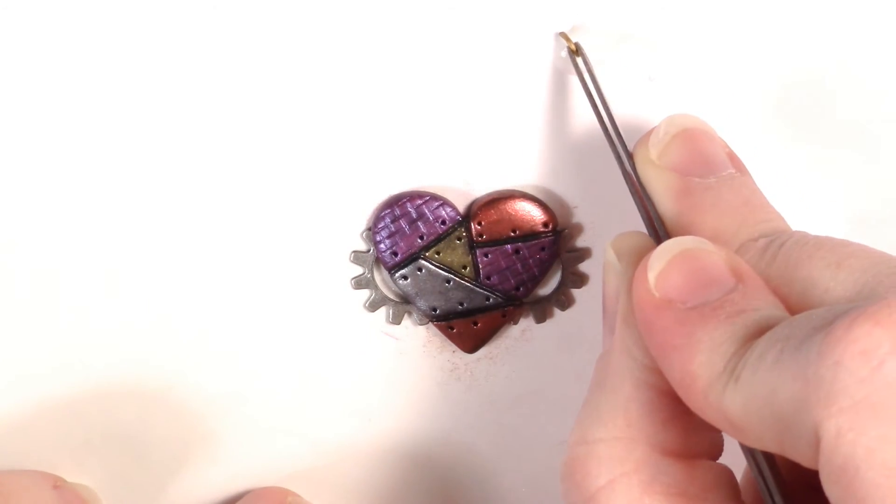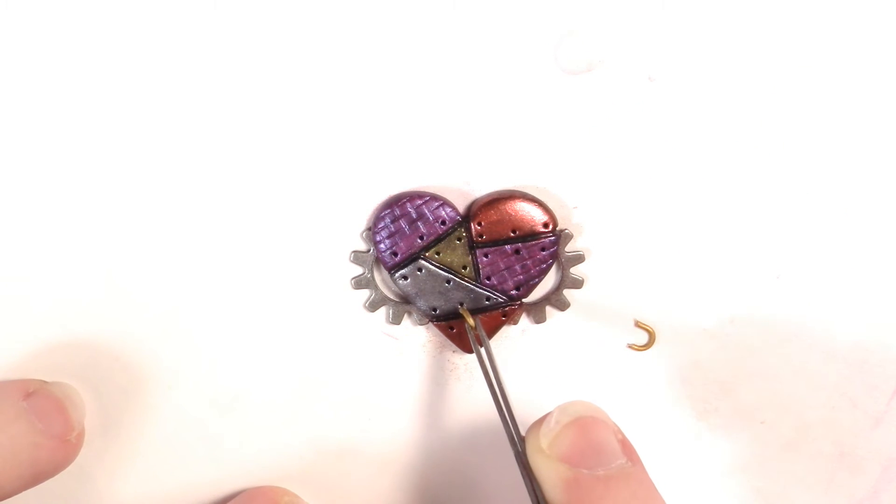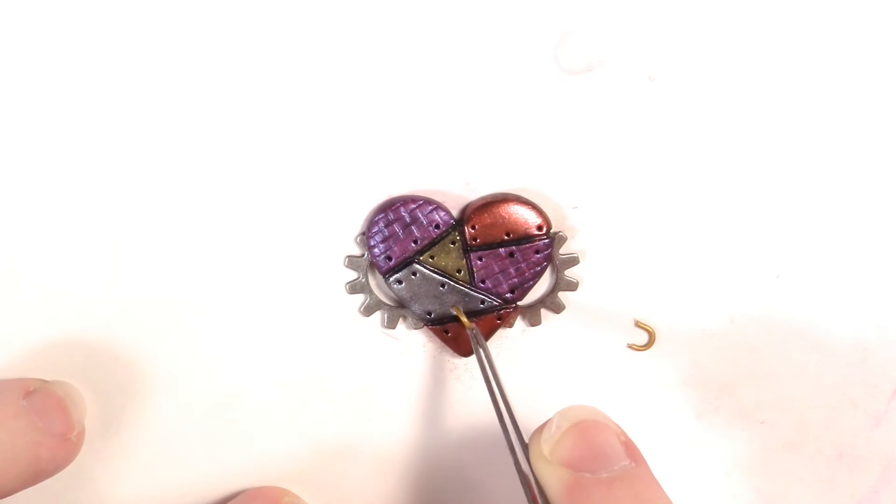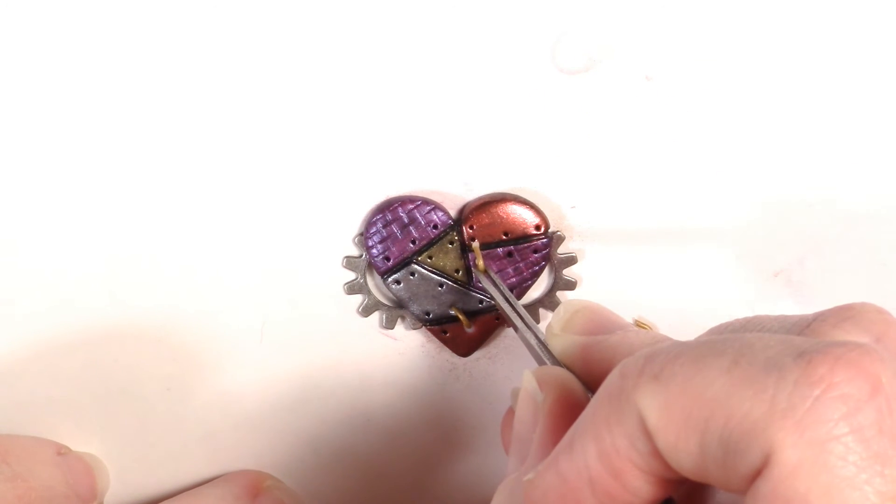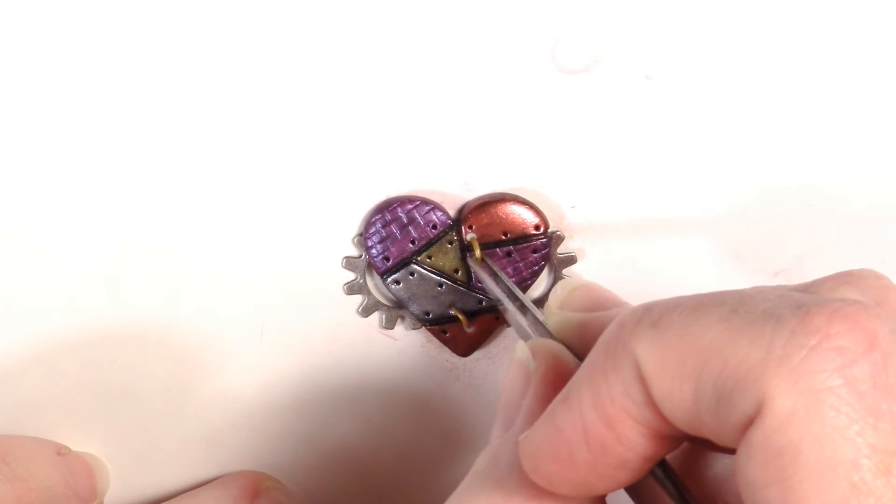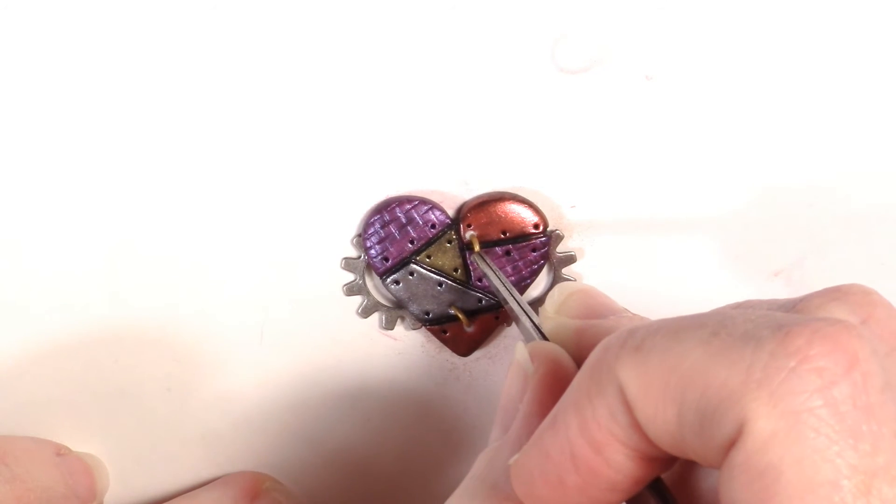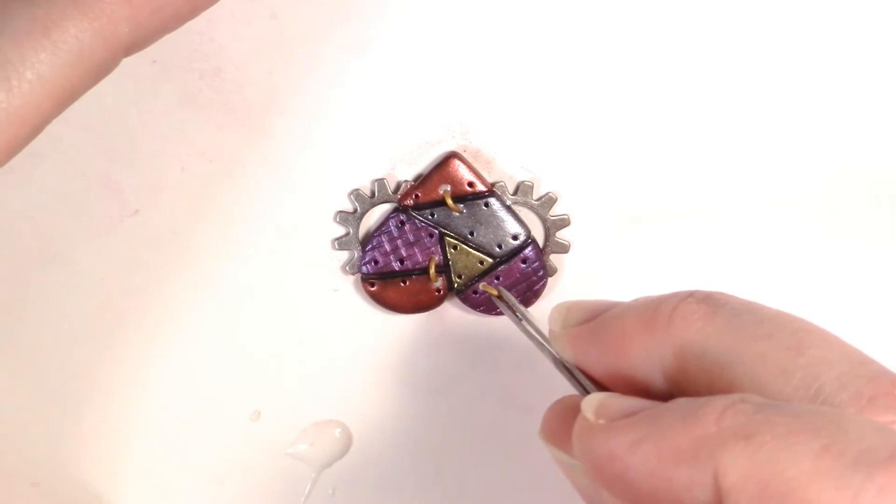Now, take a staple and line it up with two of the rivet holes. If it's not big enough, just pull open the staple a little bit more with a pair of pliers. Once it fits, dip the ends into liquid clay and put it back into the holes.